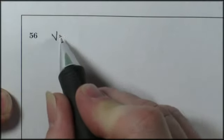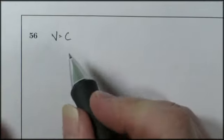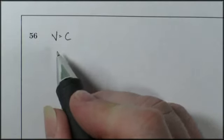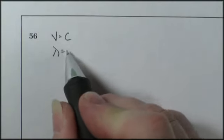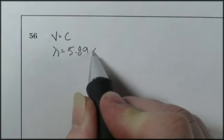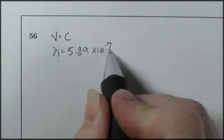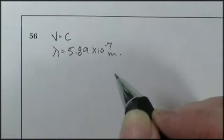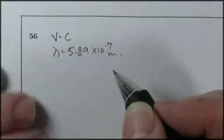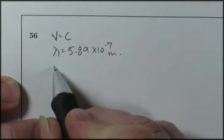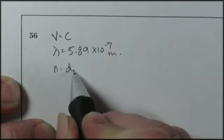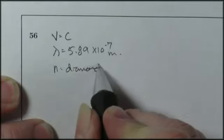Alright, so what do I know about this thing? Well, they said it was light, so it's traveling at a velocity equal to C. And it has a wavelength equal to 5.89 times 10 to the negative 7 meters in air. And it's going into diamond. So the index of refraction is diamond that we're going into.